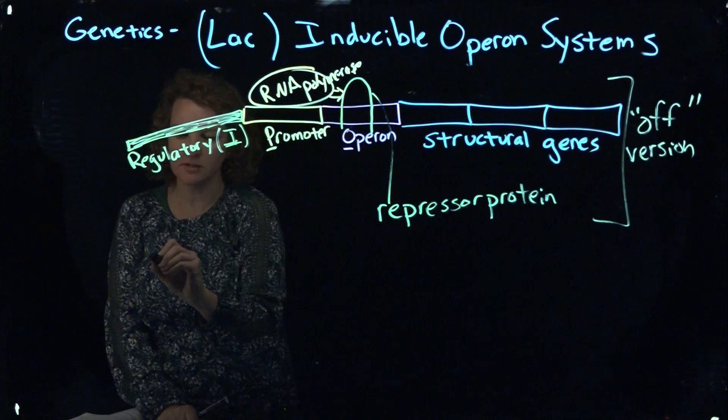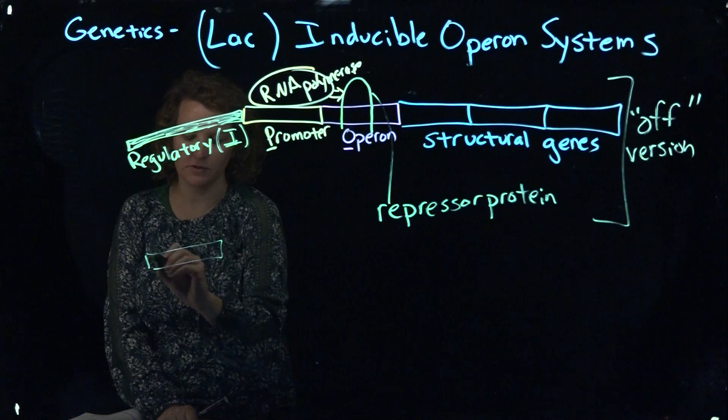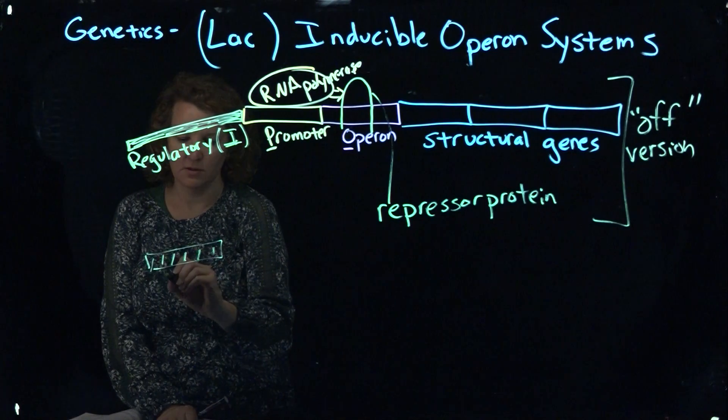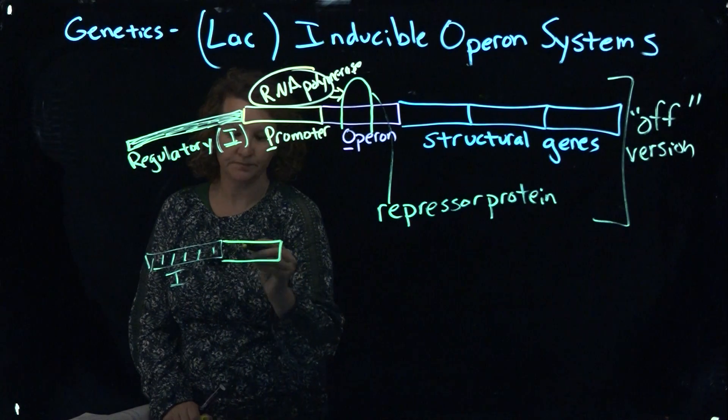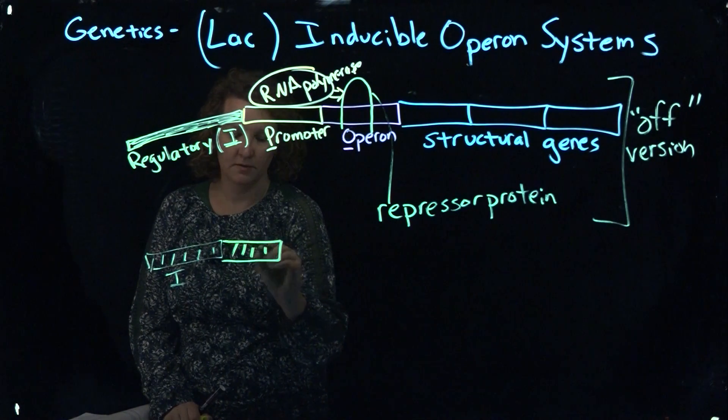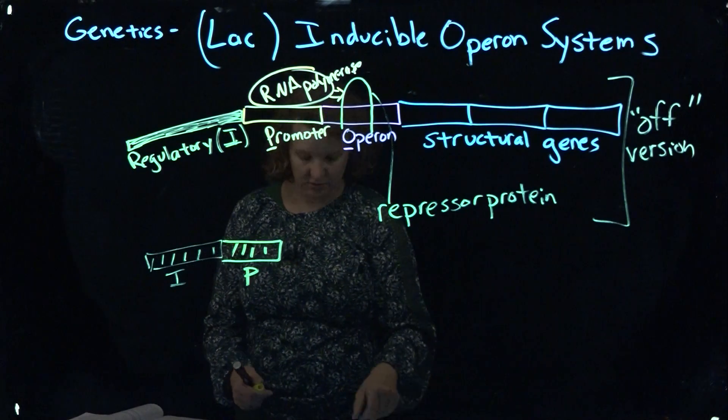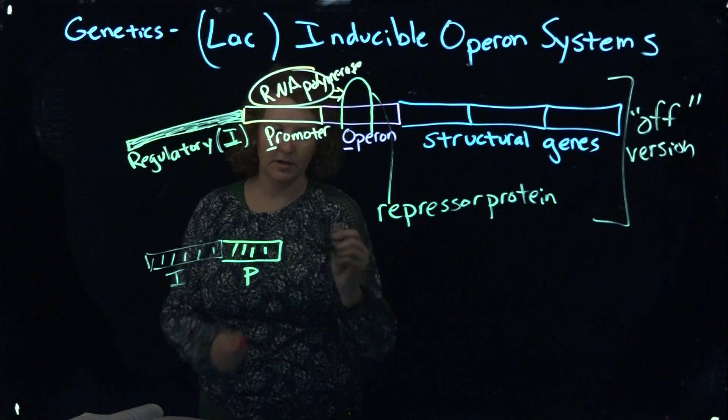Okay, so now let's quickly draw this again. We're going to show what the on version looks like. So there's that I region, followed by that promoter region. I'm going to do a little bit of shorthand here. Operator.